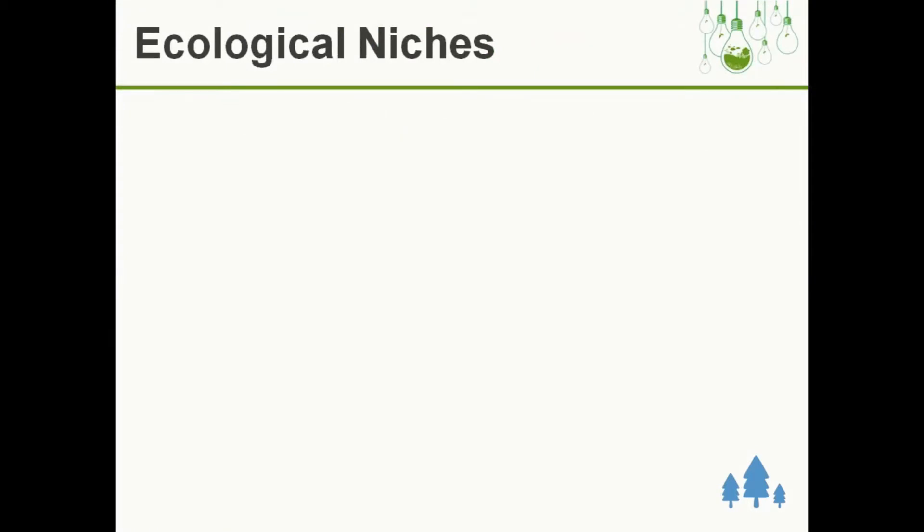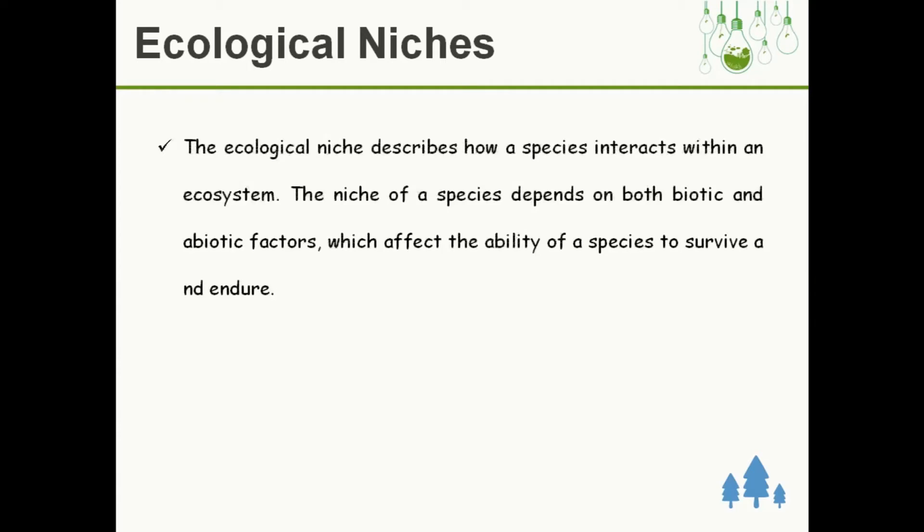Habitat particularly describes the area under which a species can reproduce and grow, whereas ecological niche describes how the species interact within its ecosystem. The niche of species depends on both biotic as well as abiotic factors which affect its ability to survive and reproduce.